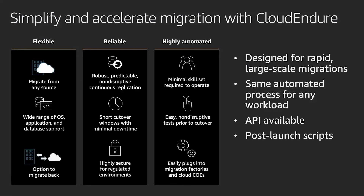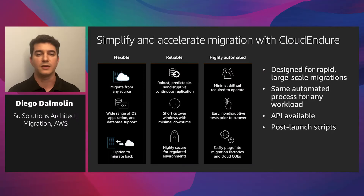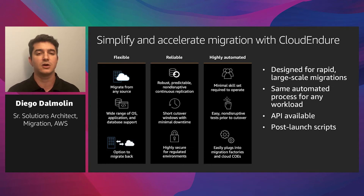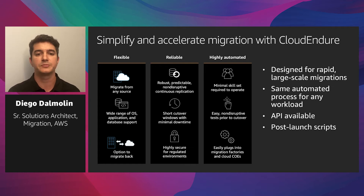Why use CloudEndure for the migration factory? First, I need a tool that is compatible with both Linux and Windows and can migrate from any source, so we can focus on a single migration solution. Second, I need a tool that has its API available, because we're focusing on automation. Third, CloudEndure has a feature called post-launch scripting, which allows any kind of automation script to be executed when the converted servers run in AWS for the first time.